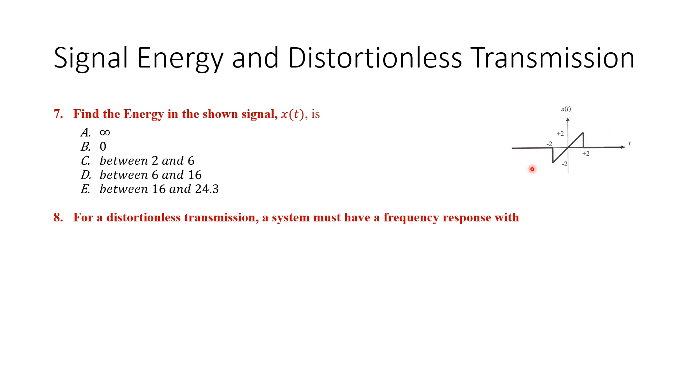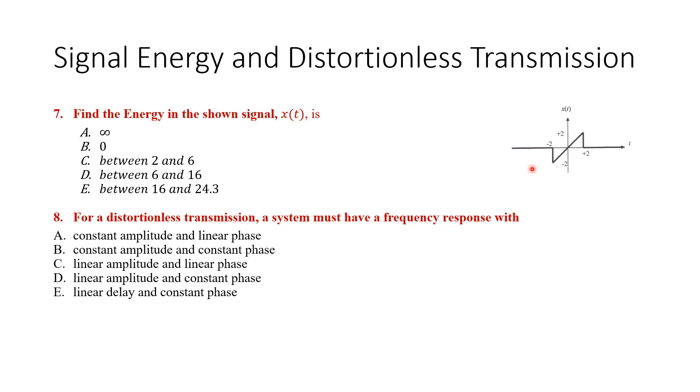For question number eight: for distortionless transmission, a system must have a frequency response with constant amplitude and linear phase, constant amplitude and constant phase, linear amplitude and linear phase, linear amplitude and constant phase, or linear delay and constant phase. Mark your answer.